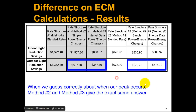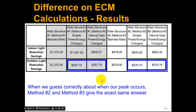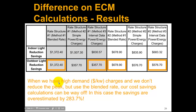Let's look at some other observations. These two numbers are exactly the same and these two numbers are exactly the same. For the outdoor light reduction, we guessed that we didn't get any peak reduction, and we didn't — so when we guess correctly about when our peak occurs, method two and method three give the exact same answer. However, if we use the blended rate and we didn't reduce the peak, as in the case of the outdoor light, our cost savings calculations can be just ridiculously off. These two are actually 283% off. That's why you want to be really careful and never use the blended rate.